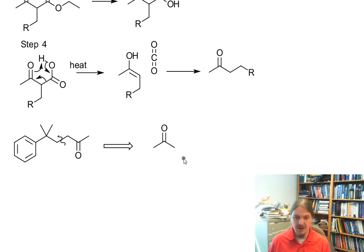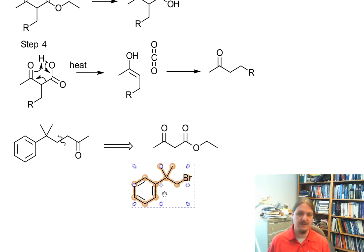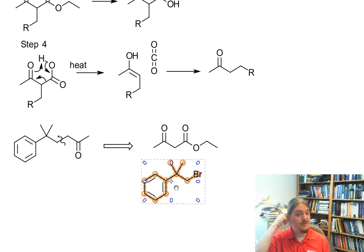And the acetone part, the ketone part, would come from an ester of—oh, not phosphorus—of acetoacetic acid. And the other part would come from an alkyl halide electrophile. These are the two pieces that you would start with.